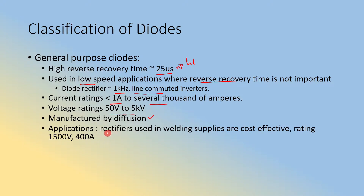These diodes are mainly used in rectifiers for welding power supplies because they are very cost effective, and they can work in ranges like 1500 volt, 400 ampere. Not all general purpose diodes go to 400 ampere — diodes specifically manufactured for 400 ampere will handle that. If you take a small signal diode and put 400 ampere through it, it will burn instantaneously. But generally, general purpose diodes can be used in rectifiers for welding power supplies.